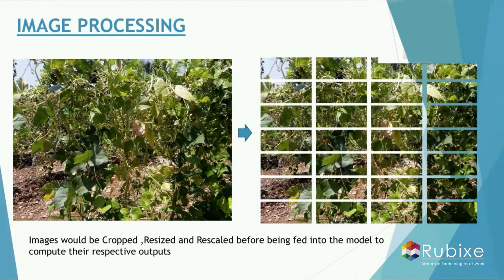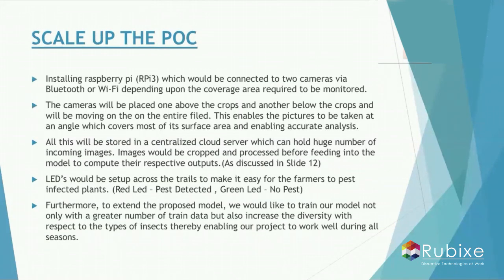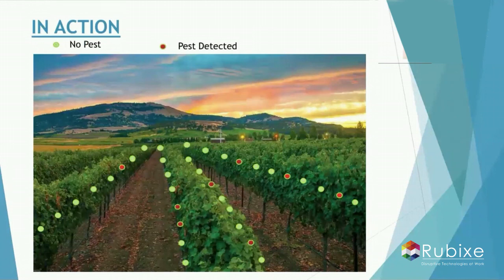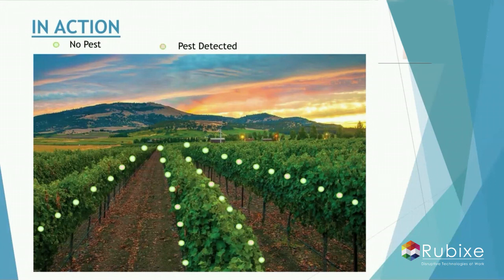To give you an idea, this is the image captured by the camera. Before our model can predict, we will crop it into multiple small images so that pest detection can occur more effectively. Furthermore, LEDs would be set across trails in the farm to help the farmer identify pest-infected areas. Green LEDs signify no pests in the area, whereas red LEDs indicate that pests have been detected in that particular area.